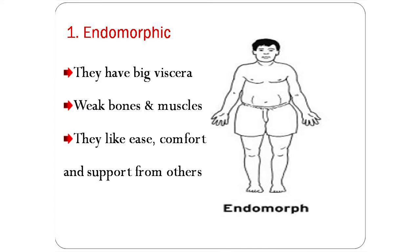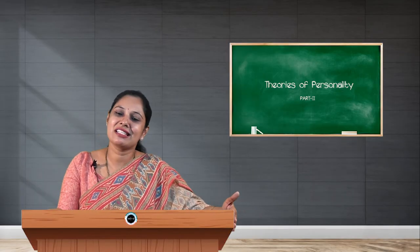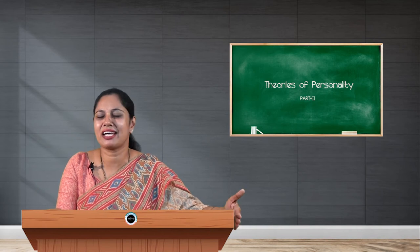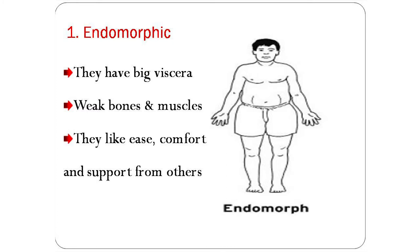You might have encountered plumpy people — if you touch them tightly, they say it hurts. Generally, these are people with big viscera but very weak bones and muscles. However, their personality character is that they are very easy-going; they put themselves at ease and seek comfort and support from others. They want a lot of comfort as well as support from people or friends. That kind of personality is called endomorphic.